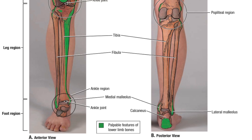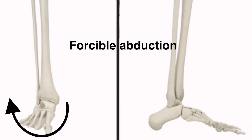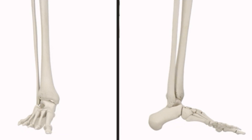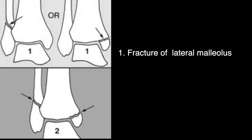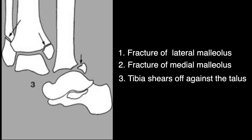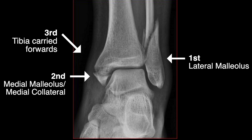The upper and lower ends of the fibula are subcutaneous and palpable. The fibula can be injured in a way that leads to an injury known as Pott's fracture. For example, if the foot gets caught in a hole in the ground, there is forcible abduction and external rotation. Such an injury would initially result in a spiral fracture of the lateral malleolus, followed by a fracture of the medial malleolus. Finally, the posterior margin of the lower end of the tibia shears off. These stages are termed 1st, 2nd, and 3rd degrees of Pott's fracture.